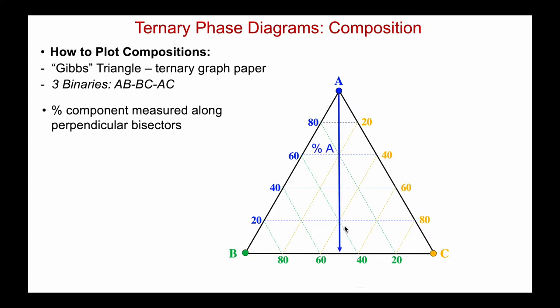For example, the percent of A: pure A is at the top, no A at the bottom, and we read off 80%, 60%, 40%, 20% along this perpendicular direction.